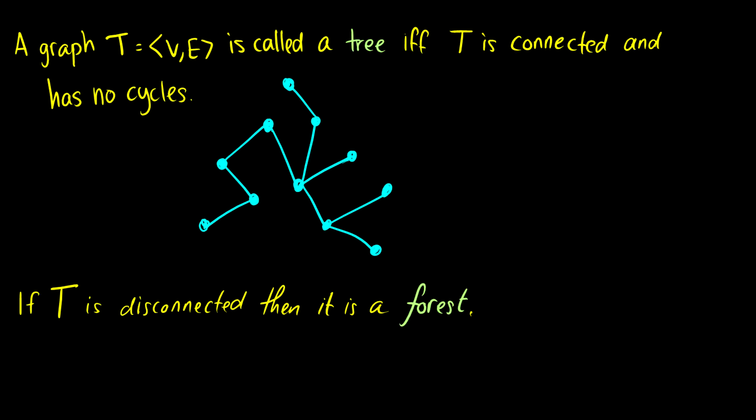So we specifically denote T instead of G to denote trees. So if I use T, I'm talking about a tree. If I use G, I'm probably talking about any graph. So that is the definition of a tree.